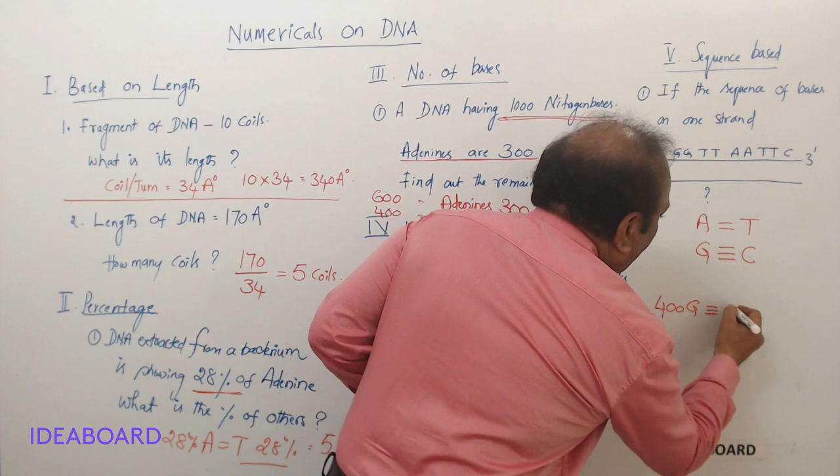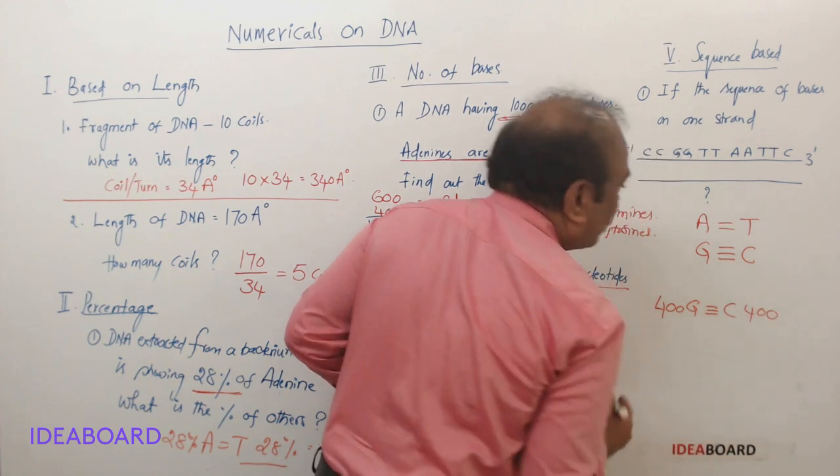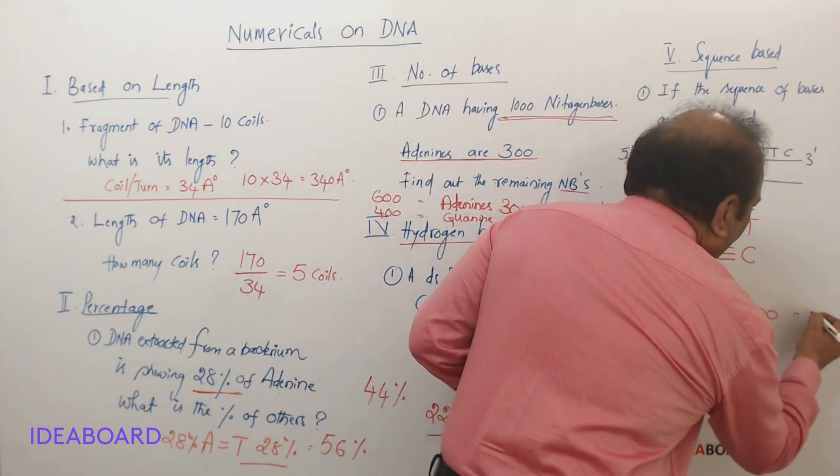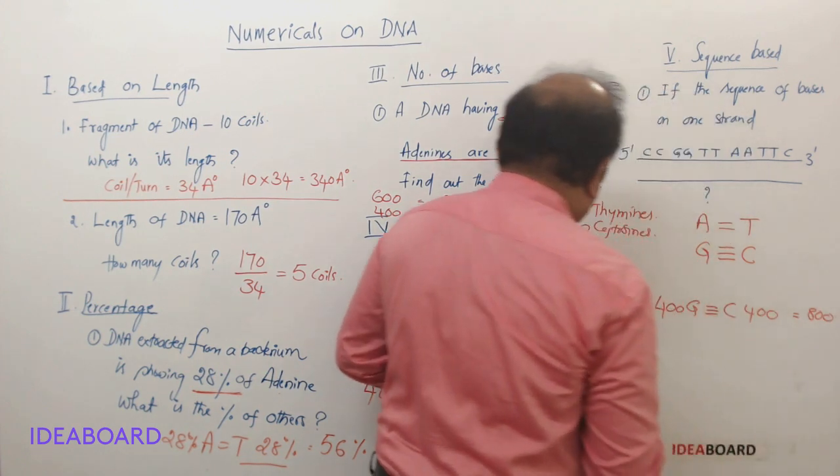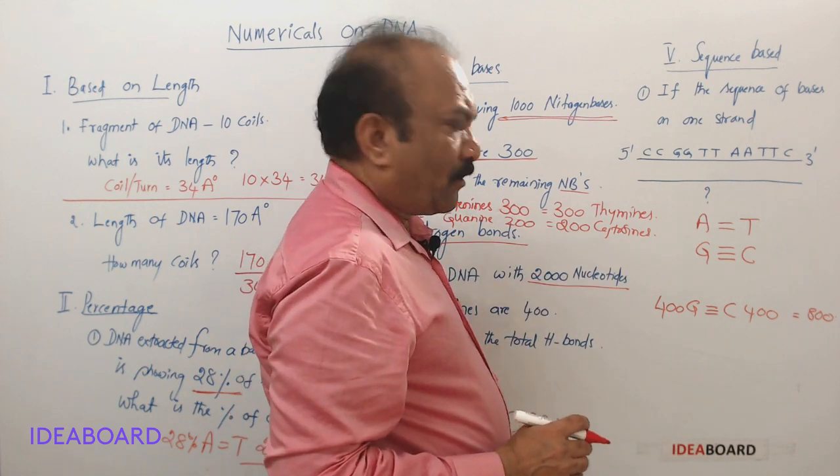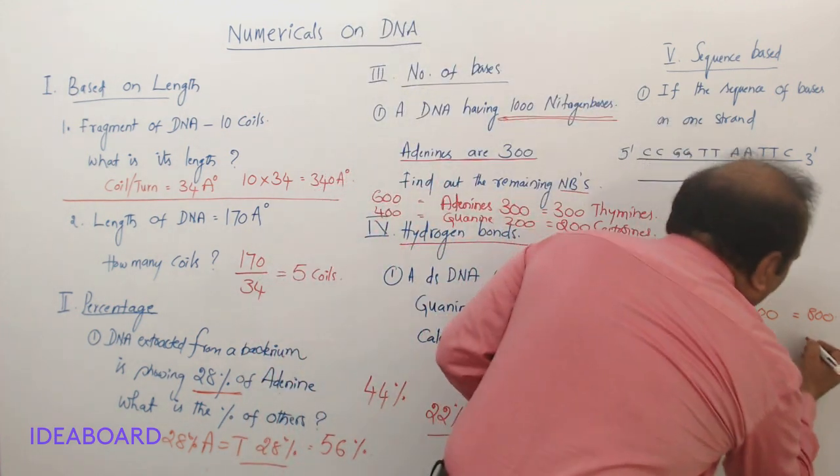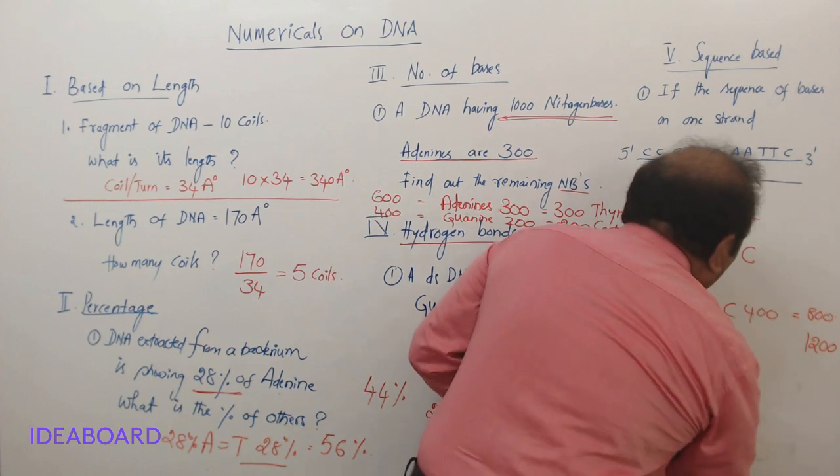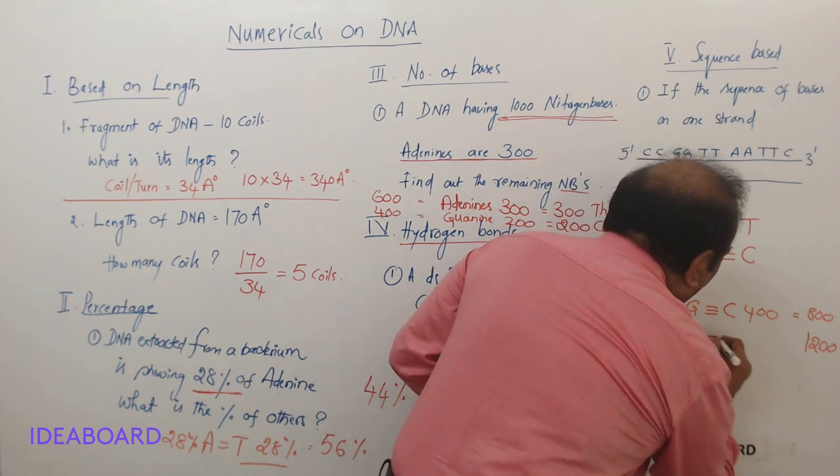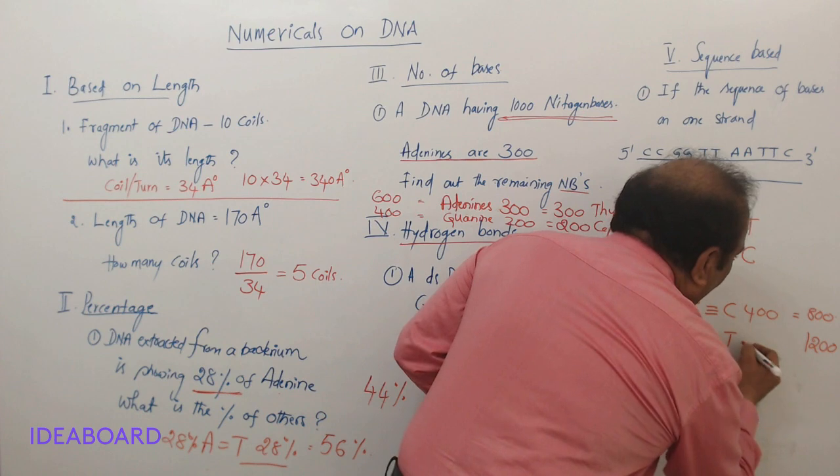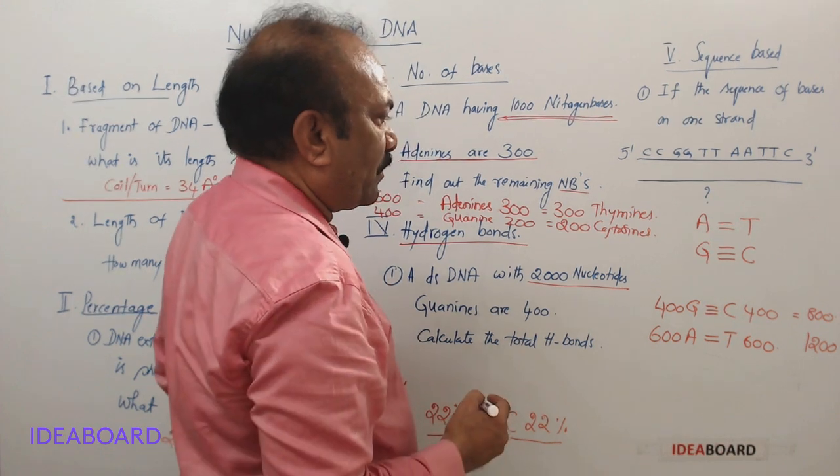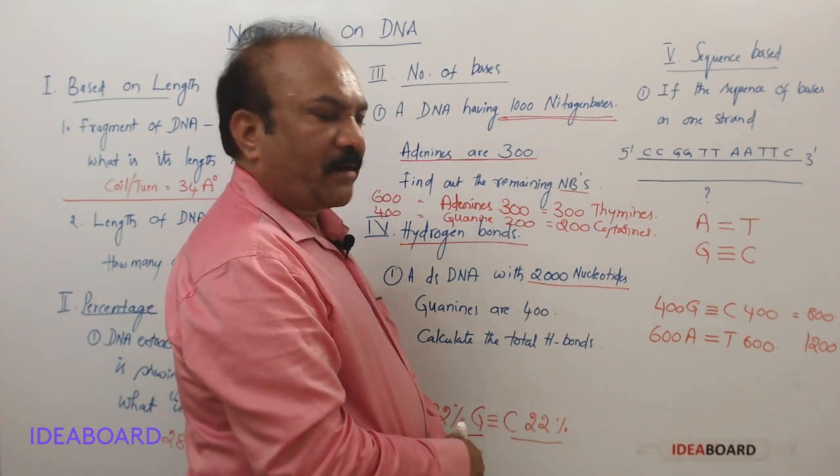So how many cytosines will be there? 400. 400 plus 400 total 800. So in 2000 nucleotides, 800 are over and how much is left? 1200. So 600 will be adenines with double bond, and the thymine is also 600.